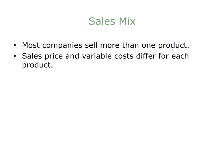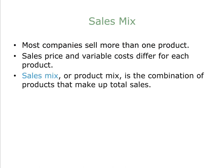To calculate the break-even point for the company, we must compute the weighted average contribution margin of all the company's products. The sales mix provides the weights that make up total product sales. Sales mix, or product mix, is a combination of products that make up total sales.